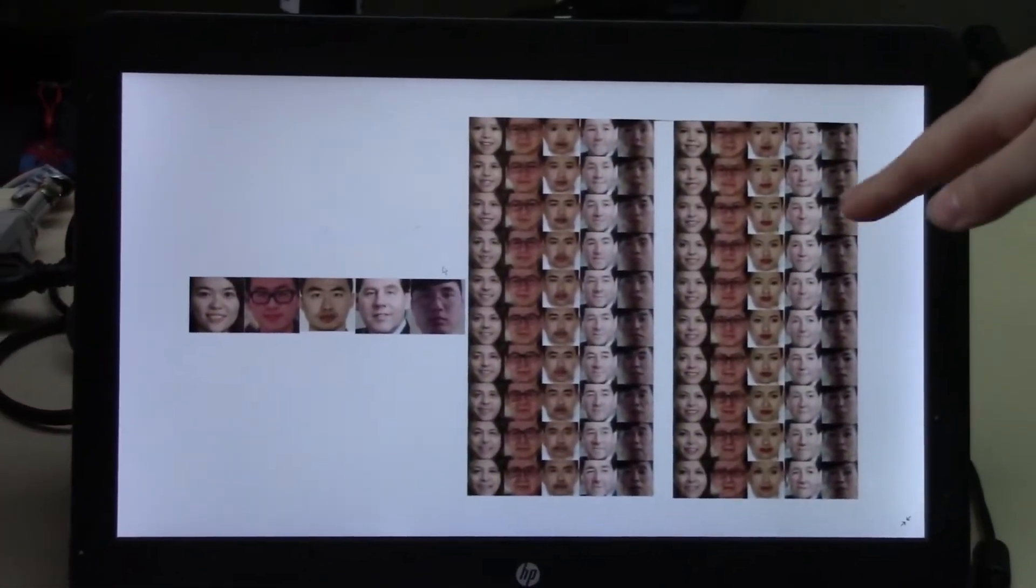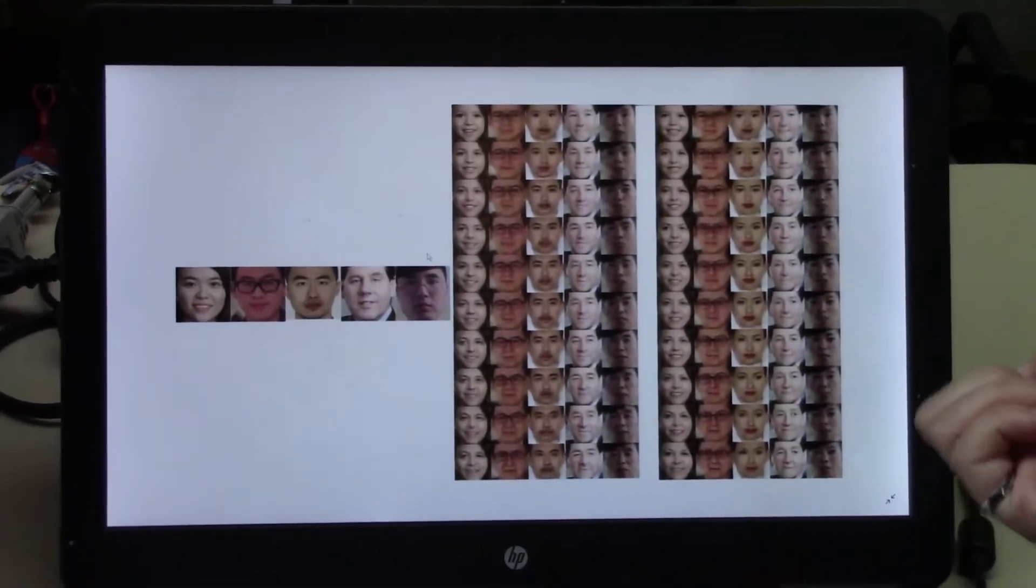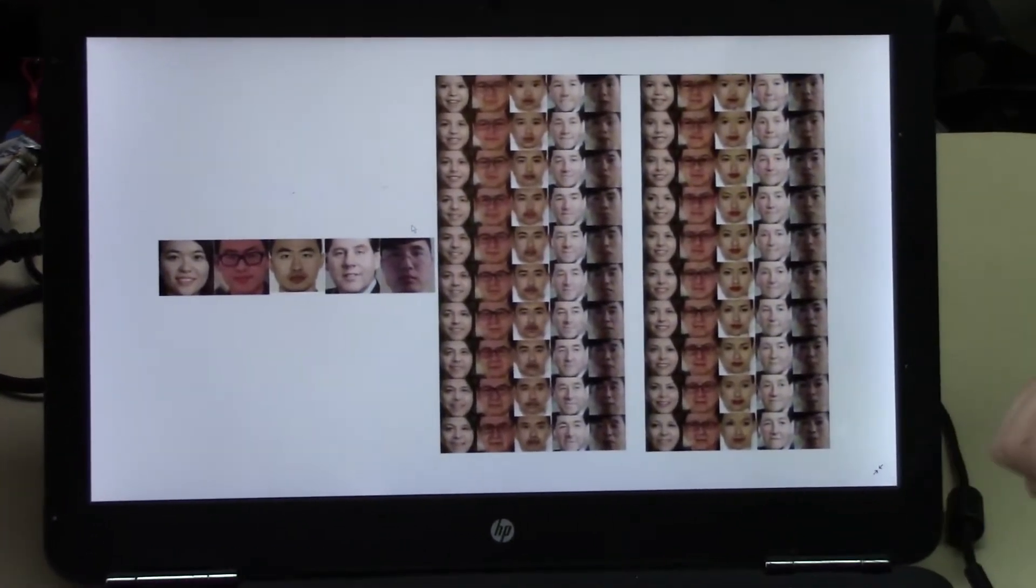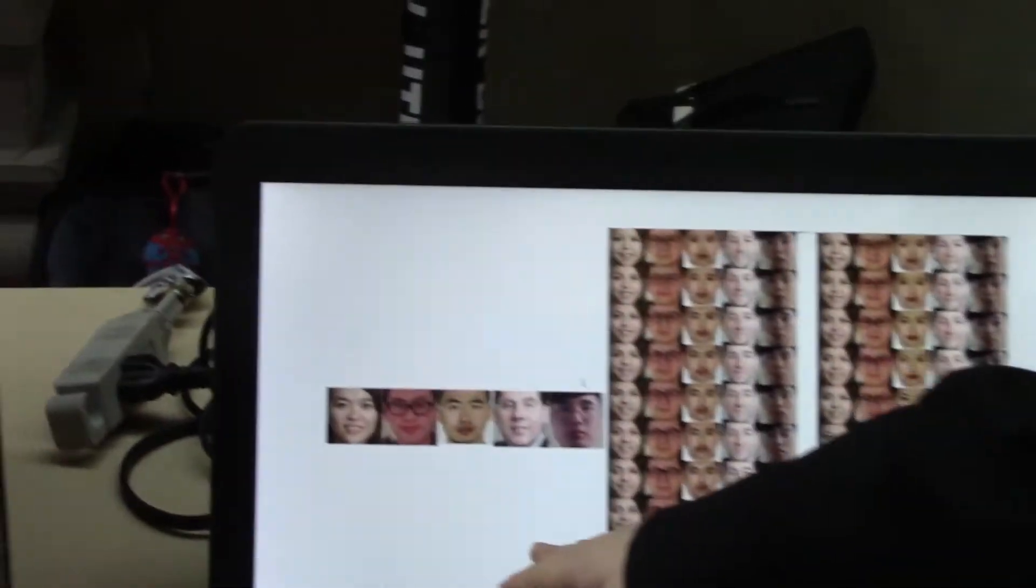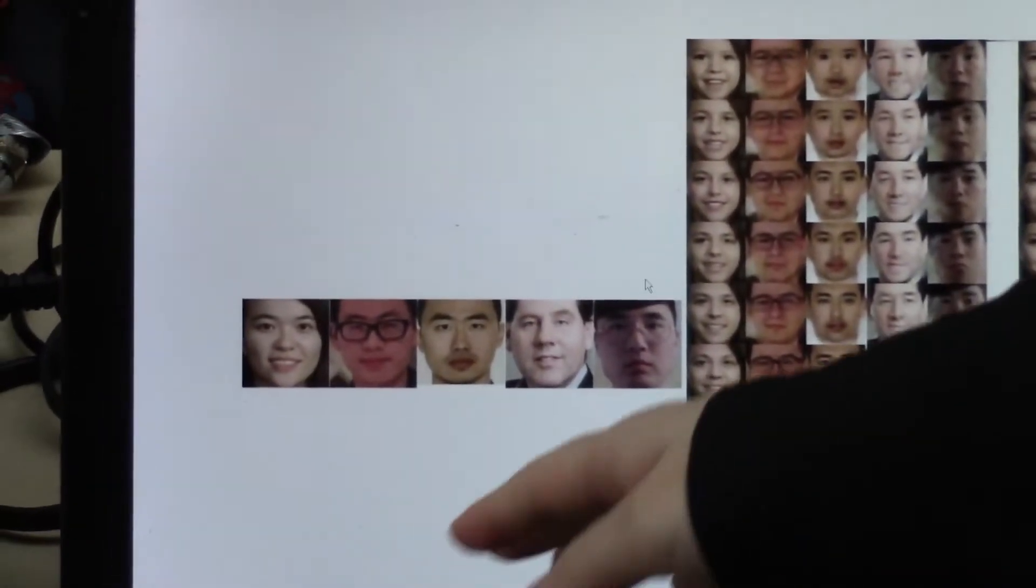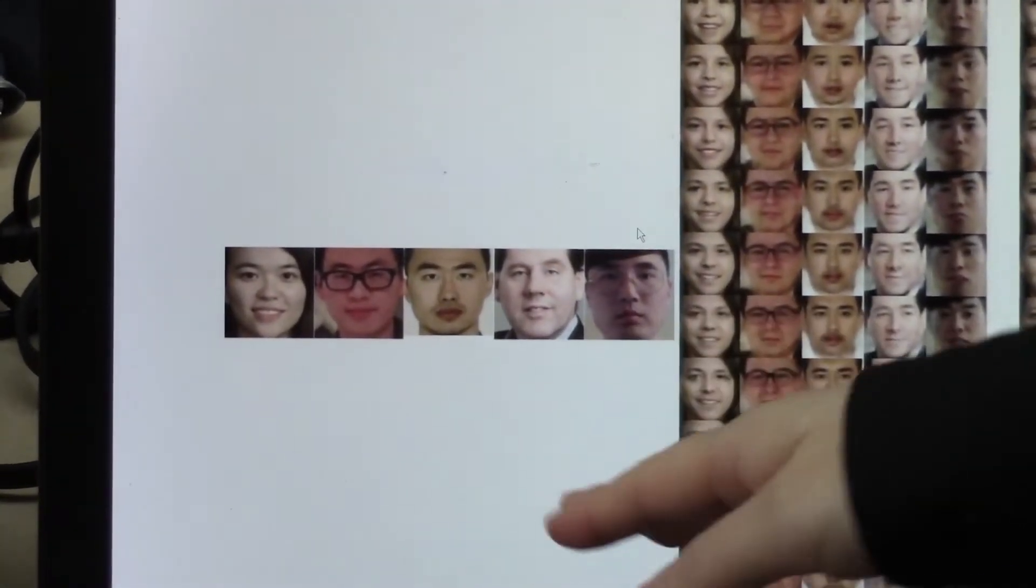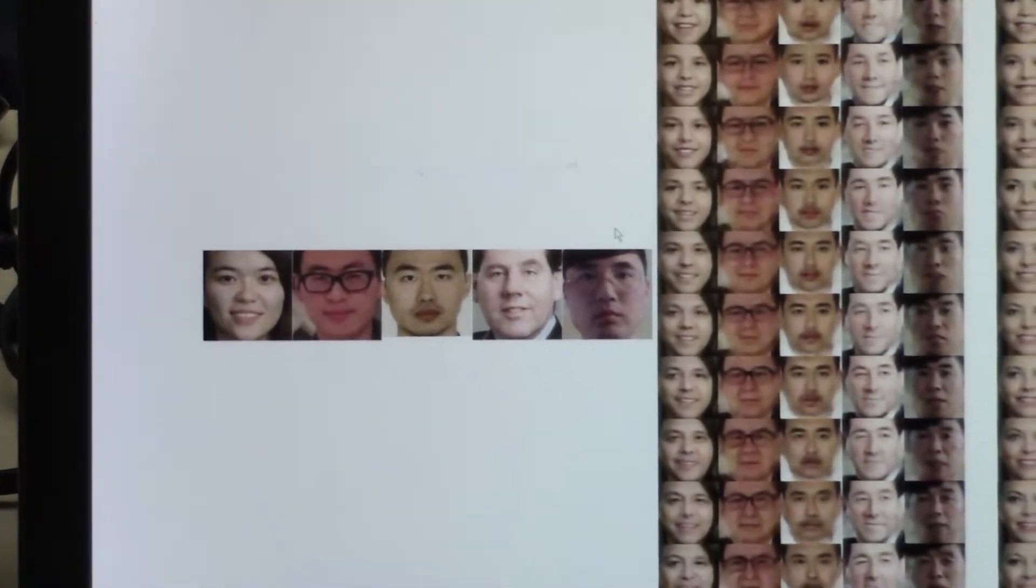So this is the model with 80% sparsity and floating point 16. Here's the input image which is just the four of us and our professor and here is the generated image from our younger age to our senior age.